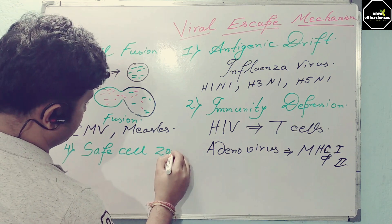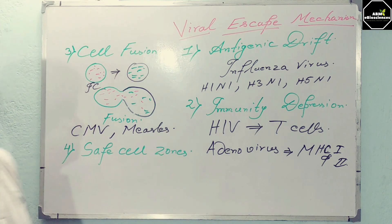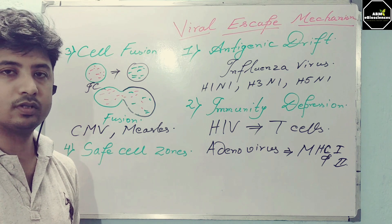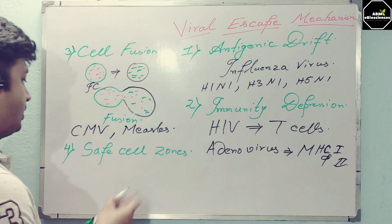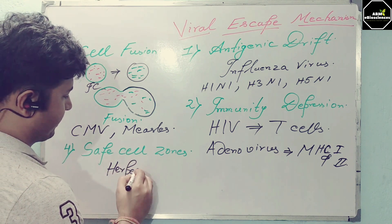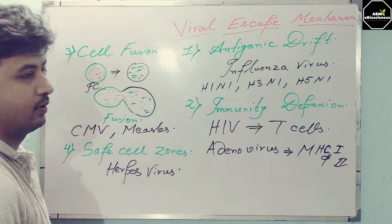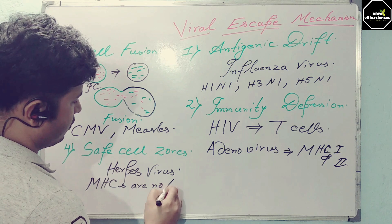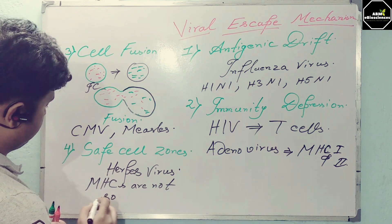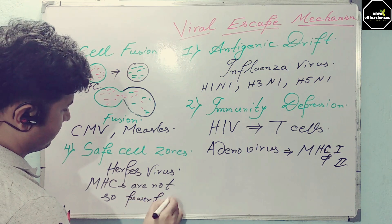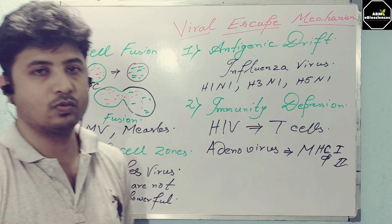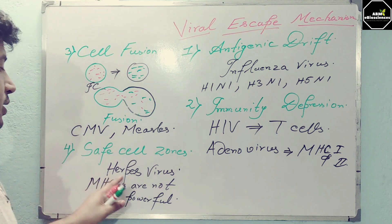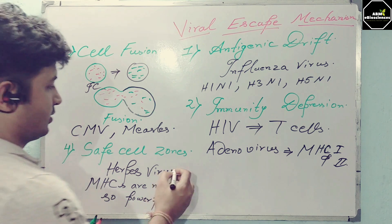The next mechanism is safe cell zones. Safe cell zones are zones where immunity is not strongly provoked, such as neurons. Neurons are generally infected by herpes virus, where the expression of MHC molecules is not very powerful. The number of cells having MHC class 2 molecules that can recognize the pathogen is scarce. So these zones are prone to infection, and the herpes virus goes for CNS infection.